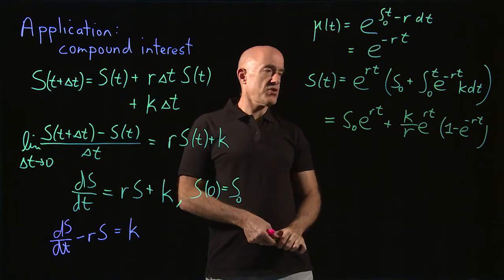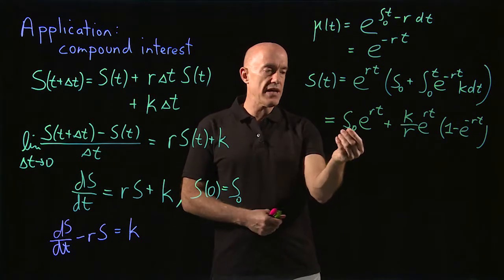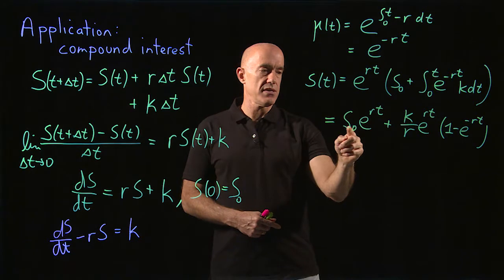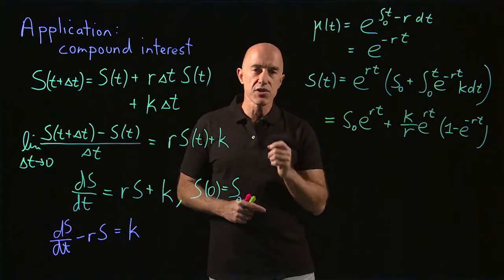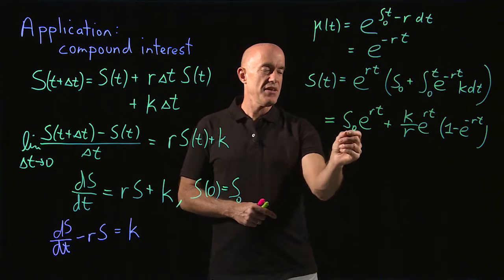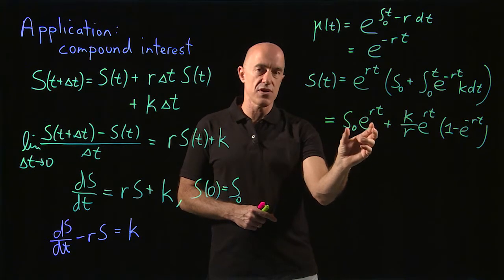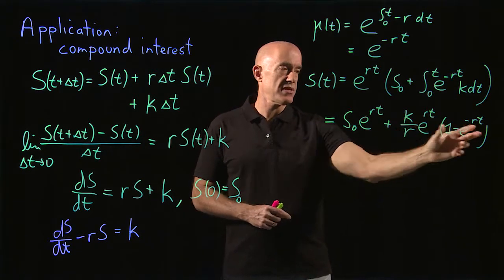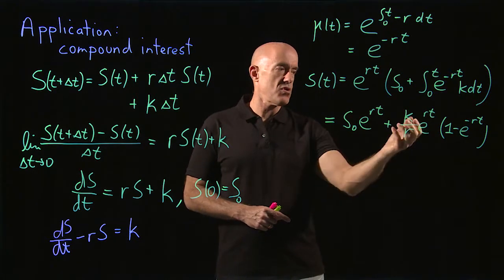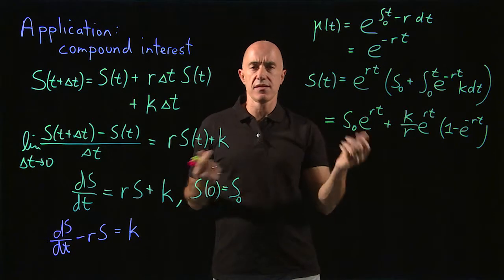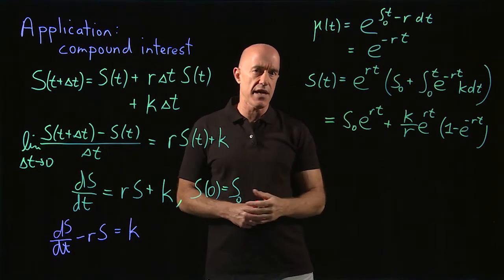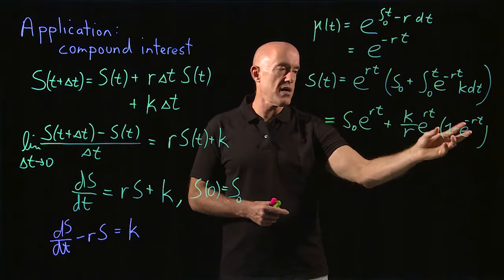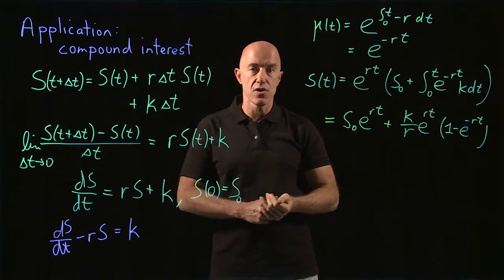Let's interpret this solution. s-naught is the initial money in the account, and we see that compounding causes the initial money to grow exponentially — that's always a good thing when your money grows exponentially. This is the growth of your initial deposit. Then you put in k dollars per year, and that money will also grow exponentially. For a retirement account looking 30 to 40 years into the future, the e to the minus r·t term becomes small relative to 1, and you see the deposits growing exponentially.